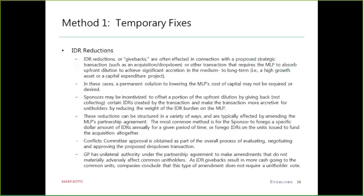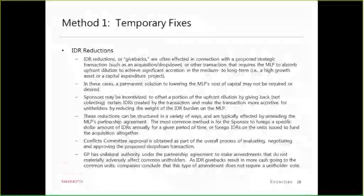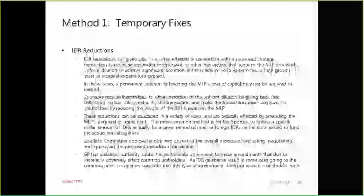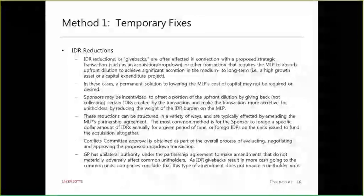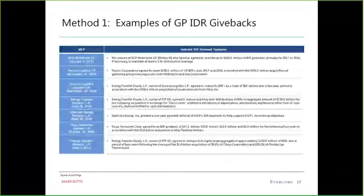The first method — the temporary fix — is to make an acquisition accretive by the sponsor agreeing to forego some of the IDR distributions. Conflicts committee approval is usually obtained even though it is a unilateral give by the sponsor, because it is done in connection with a drop-down as part of the consideration for the conflicts committee to approve the transaction. No unit holder vote is necessary. Examples can be a drop-down or an acquisition — the GP steps in to make the transaction better for the LP by giving something up.